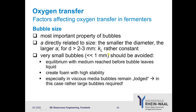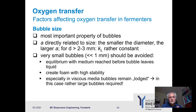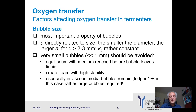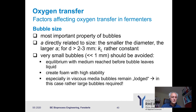Bubble size is the most important property. The interfacial area A is directly related to size — the smaller the diameter, the larger A. If D is above 2–3 mm, KL stays rather constant. Below that, KL also varies. But above 2–3 mm, KL is constant, so only the surface area is relevant for the complete KLA value.